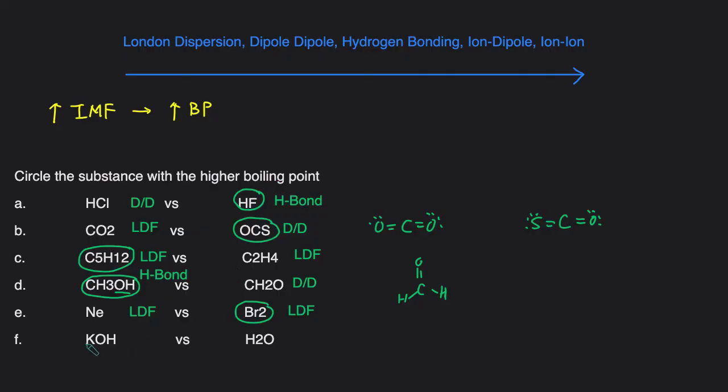And the last example KOH versus H2O. Let's take a look at H2O. H2O we know that has hydrogen bonding because you have an H directly attached to an O. And then KOH. KOH actually is an ionic compound. It's potassium hydroxide. So since it's ionic it'll be ion-ion. And the reason why we know it's ionic is because K is a metal and OH is a polyatomic ion. Ion-ion is stronger than hydrogen bonding so KOH will have the higher boiling point.